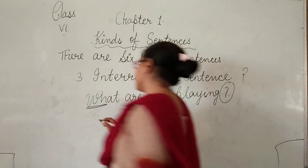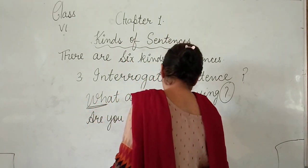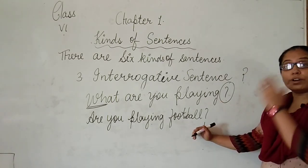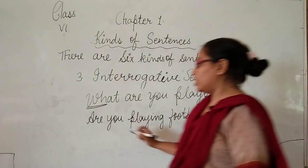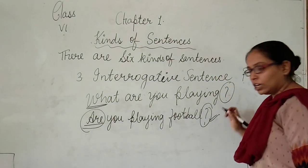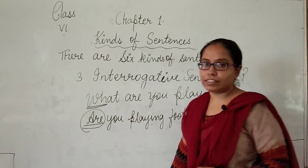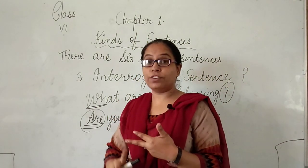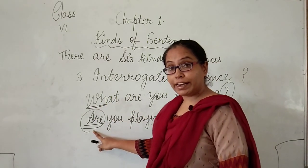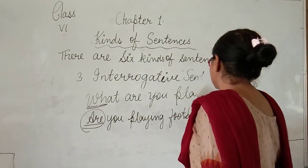Another example: 'Are you playing football?' Here the sentence begins with an auxiliary verb and ends with a question mark. To identify an interrogative sentence: read the sentence properly, find the expression, check if it begins with a WH word or auxiliary verb at the start, and confirm it ends with a question mark. In this way, you can easily identify the interrogative type of sentences.